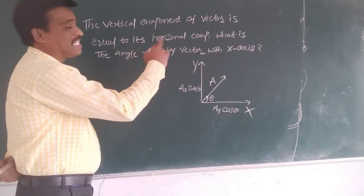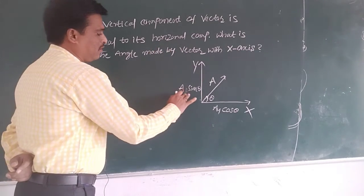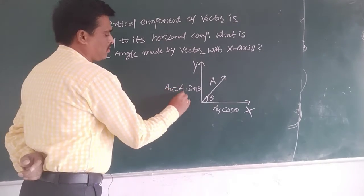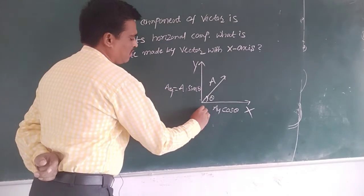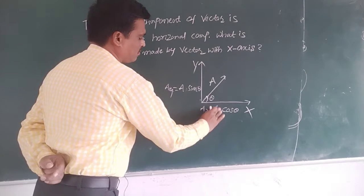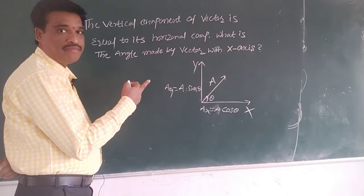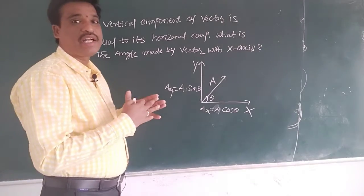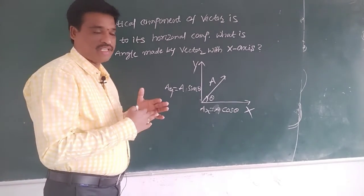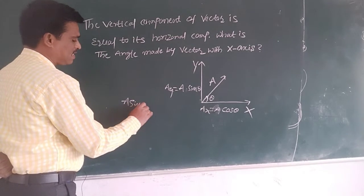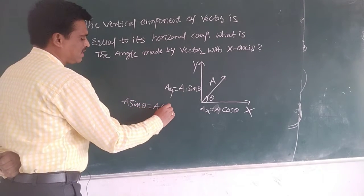Now, horizontal component is equal to vertical component. What is the vector? AX is equal to AY. I had given you the problem, horizontal component of vector equals vertical component, so A sine theta equals A cos theta.